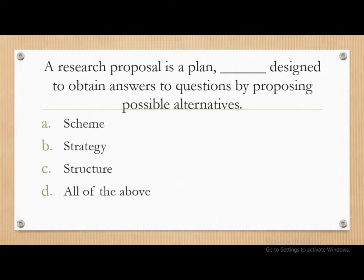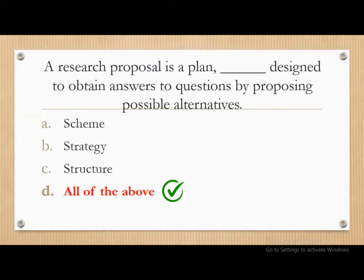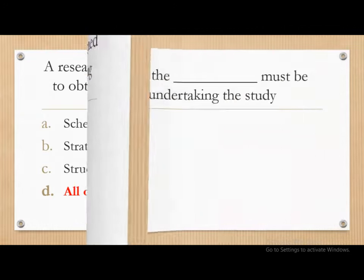A research proposal is a plan, dash, designed to obtain answers to questions by proposing possible alternatives. Options: scheme, strategy, structure, or all of the above. The correct answer is all of the above. A research proposal is a plan — it is a scheme, a strategy, and a structure designed to obtain answers to questions by proposing possible alternatives.